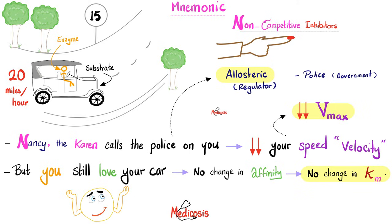Here is a better mnemonic. Imagine you were driving down the road minding your own business. Your grave sin was driving just above the speed limit. So Nancy the Karen showed up out of nowhere and started yelling at you: 'I'm gonna call the police on you!' What happens to the speed of your car? You will slow down and your Vmax will go down. However, you still love your car — the affinity between you, the enzyme, and your old Ford Model T, the substrate, remains constant. There is no change in Km.